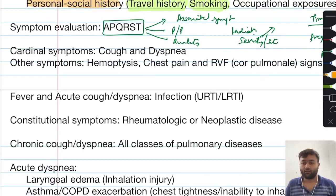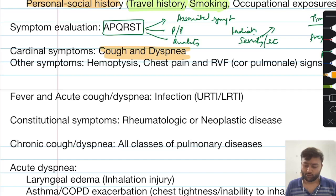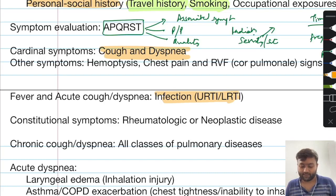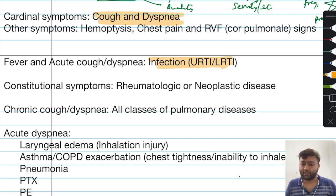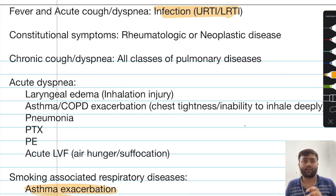The cardinal symptoms of any pulmonary disease are cough and dyspnea. Cough can be acute or chronic. When acute cough and dyspnea are specifically associated with fever, you should always think of infection — it can be an upper respiratory infection like sinusitis, or a more serious disorder such as lower respiratory tract infection like pneumonia. When cough is chronic, lasting more than eight weeks, any category of pulmonary disease — obstructive, restrictive, or other — can be the cause, and it requires detailed evaluation.